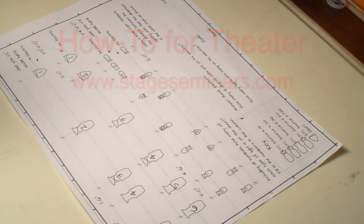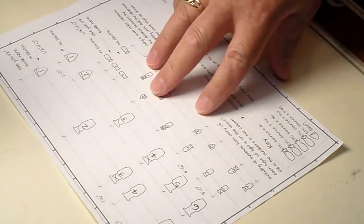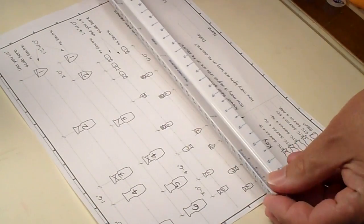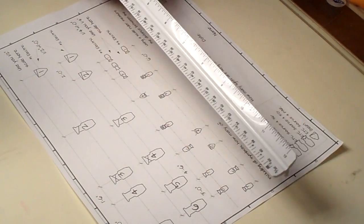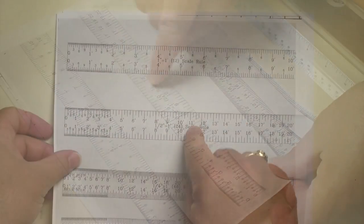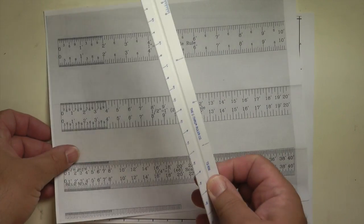This is our worksheet for working with a scale ruler. As you can see, it's a sample of lighting instruments on pipes and such. This is a standard architect scale ruler. And this is a piece of paper that has three different scale rulers to use if you don't have an architect scale ruler.